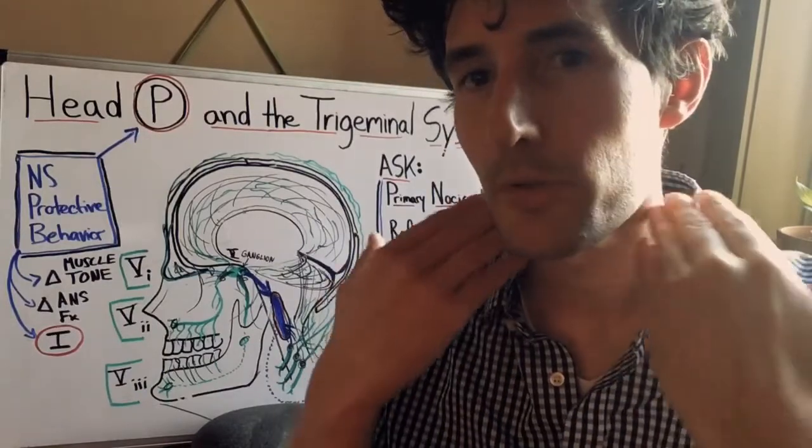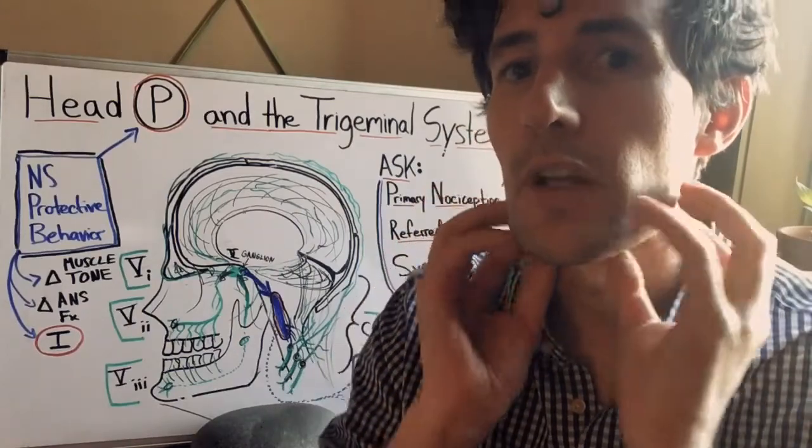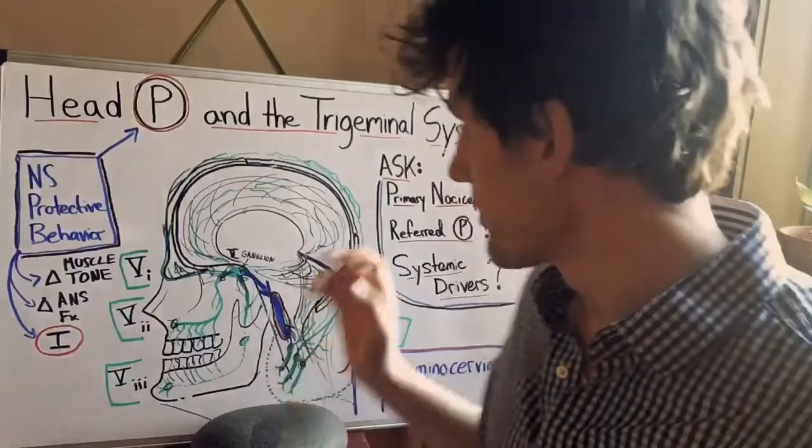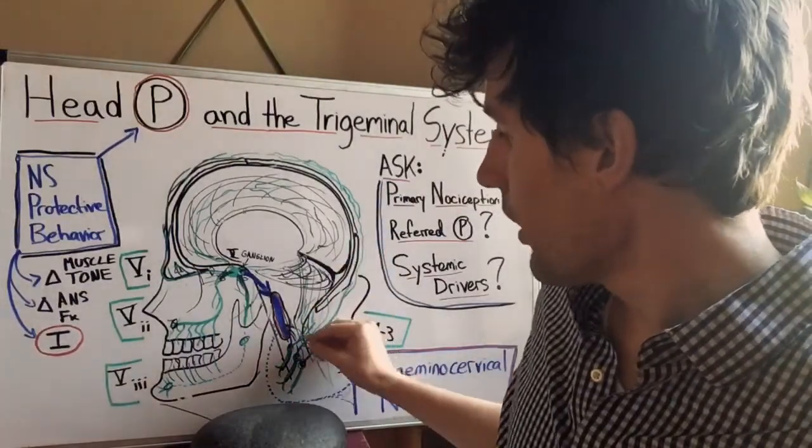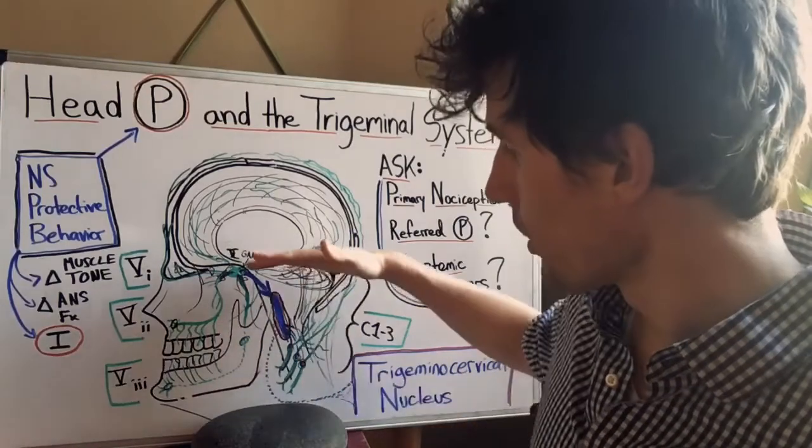Let's talk about the upper cervical nerves C1 through C3. These nerve roots send projections anteriorly and also posteriorly to the back of the head. They also innervate the meninges, the dura, below the tentorium.